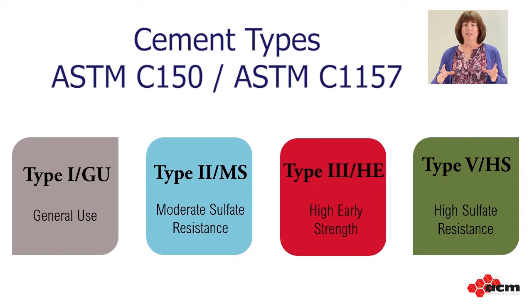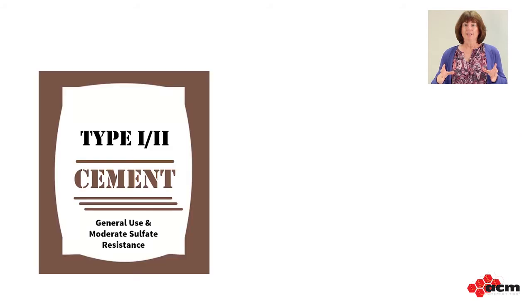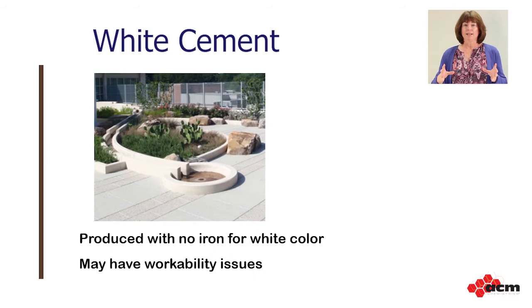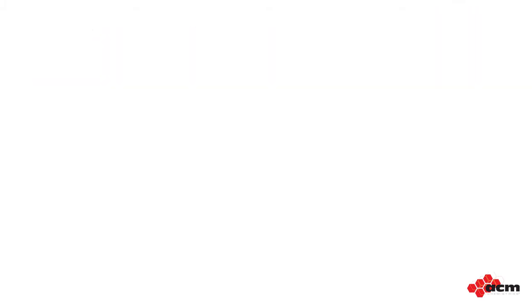To make it even more confusing, there are also different ways to describe them, so all in all there are more than 20 different classifications of cement. To simplify things, there are two main kinds of cement that most producers use. The first is type 1-2, or general-use cement. The second is type 3, or high-early cement, that gains strength faster in the first day or two compared to type 1. There's also white cement — a specialty cement used in architectural products, especially when you want to make bright, light colors.